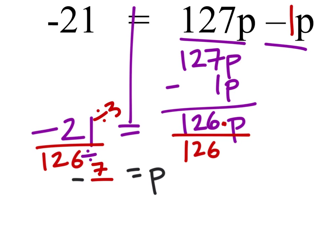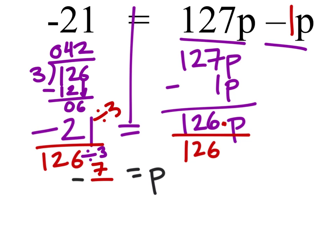And then 126 divided by 3, that's something we may need to do. So 126 divided by 3. Three goes not into 1, but it does go into 12 four times. So minus 12 gives us 0, drop to 6. Three goes into 6 two times evenly, so we have 7 over 42.